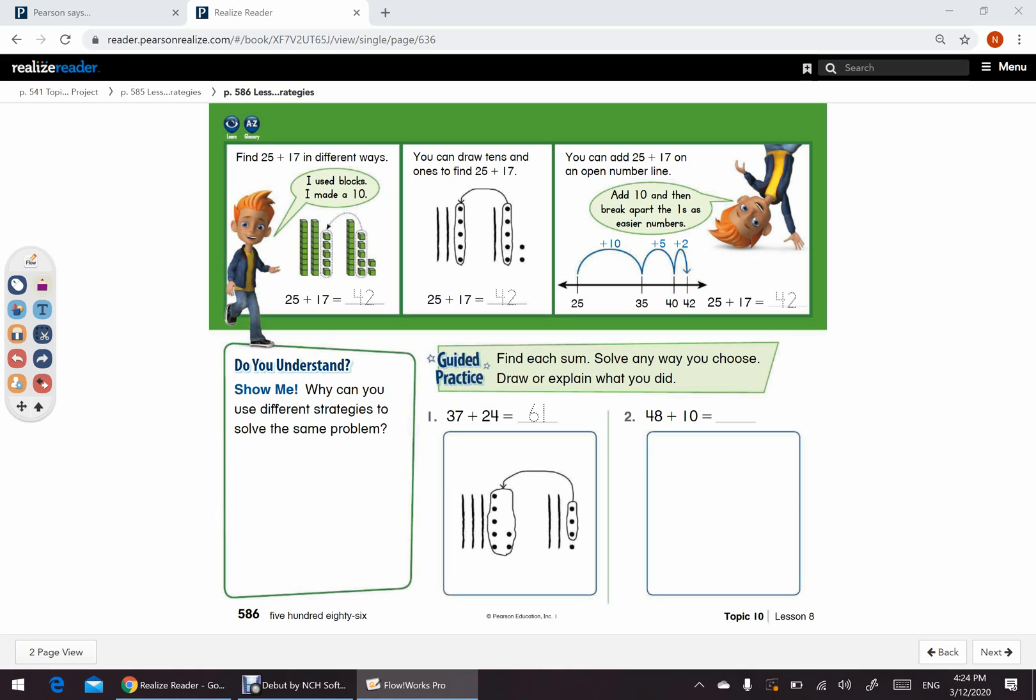Now, let's go to the next question. 48 plus 10. How we'll solve it? We will use any of the method, which is easy. So, over here, I will use an open number line. So, here, we'll start with 48. And we have 10. 48 plus 10 equals 58. You can use the two methods if it's easy for you. Let me explain you with one more example.